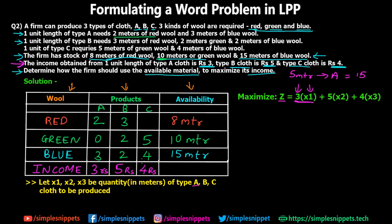Similarly, 5 times x2 is the income on cloth B multiplied by the quantity of cloth B, and 4 times x3 is the income on cloth C multiplied by the quantity x3. The total gives the actual total income which we need to maximize. So this is the maximization equation.